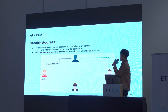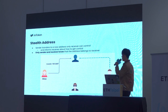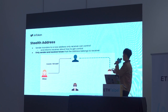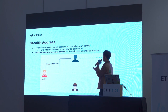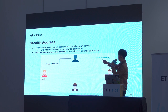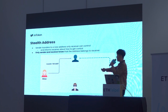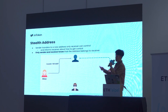Now the main topic: stealth addresses. As mentioned, the sender transfers to a new address that only the receiver can control and informs the receiver about how to take control. Only the sender and receiver will actually know the address belongs to the receiver. For example, Alice transfers 100 USDT to a new address that only Bob can control. From everyone else's point of view, they don't know that Bob actually controls this address, so they don't know that Bob actually owns this 100 USDT.